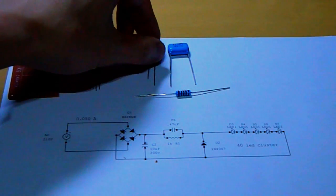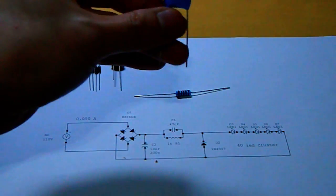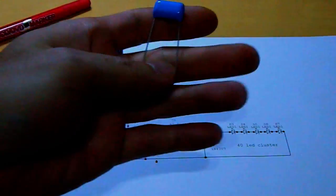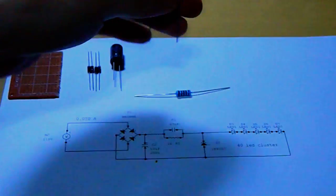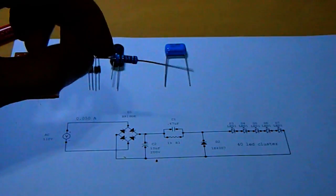Then comes the tank circuit. It is 0.47 microfarad 250 volts. And the 1K resistor.